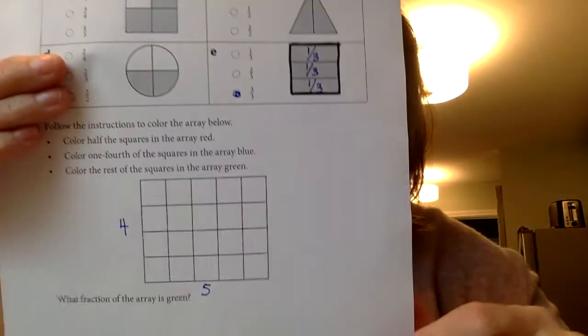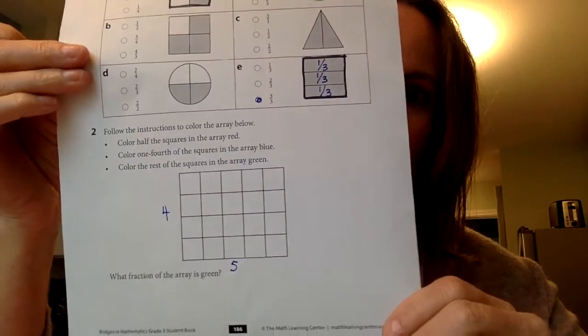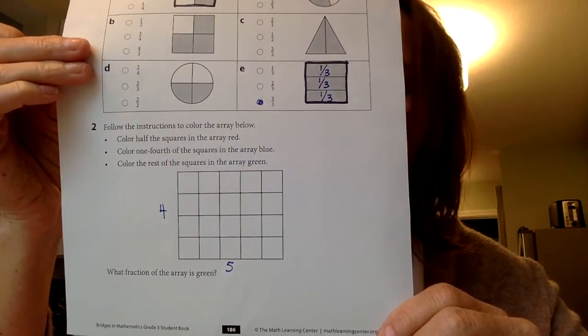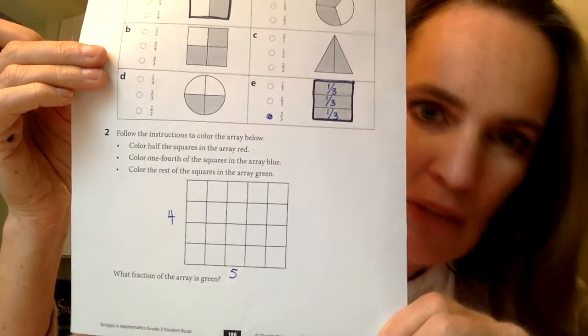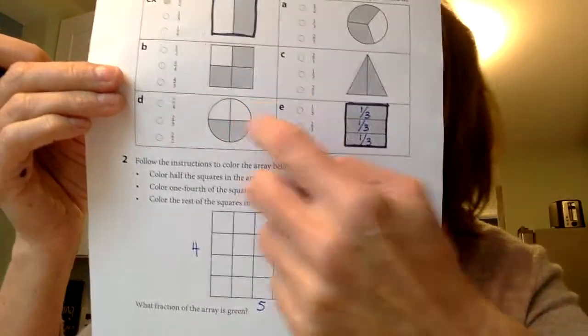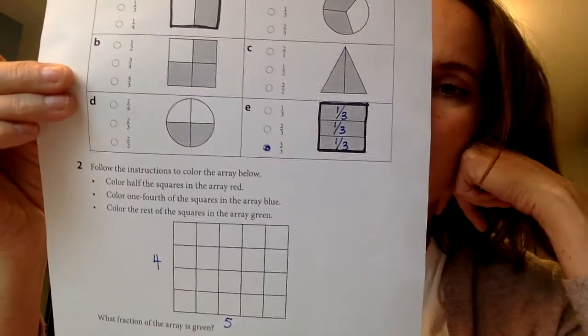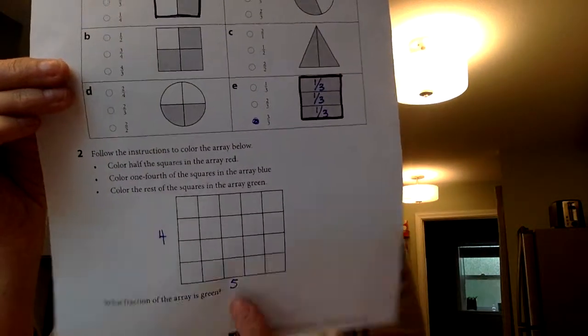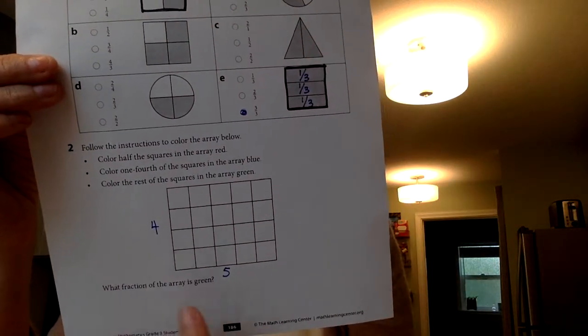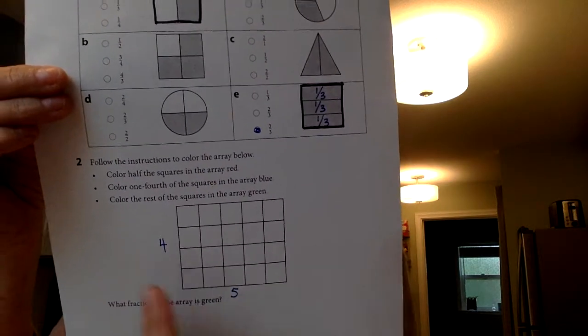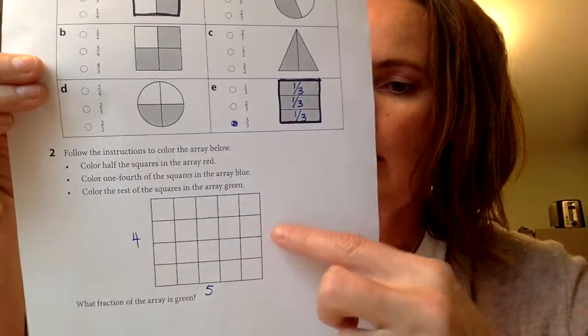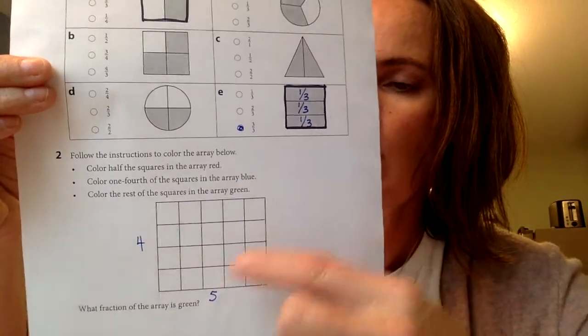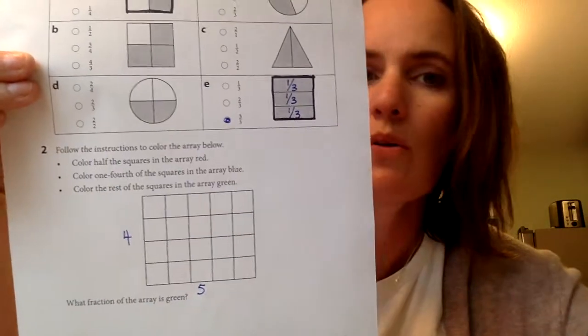So we know that an array can help us with multiplication, don't we? This isn't asking us about multiplication, but it can help us. Okay? So we want to figure out just like this guy here, the whole, right? How many parts are in the whole? So let's look. We know that five or four groups of five. I'd rather count by fives than fours. Four groups of five. So we've got five, ten, fifteen, twenty. So there's twenty in the whole.